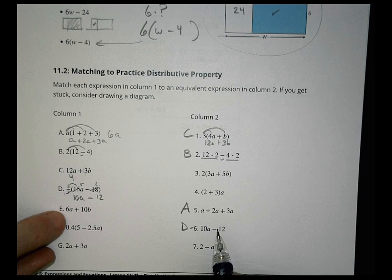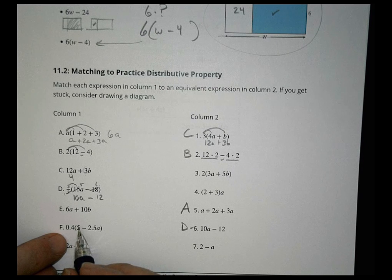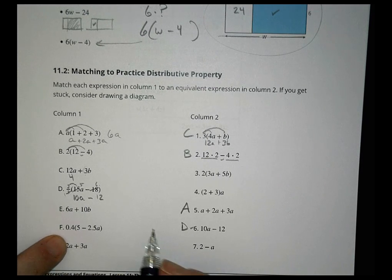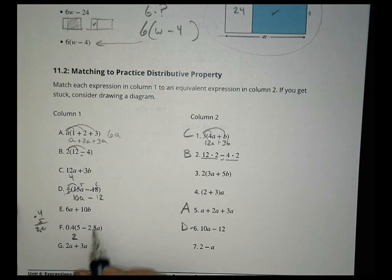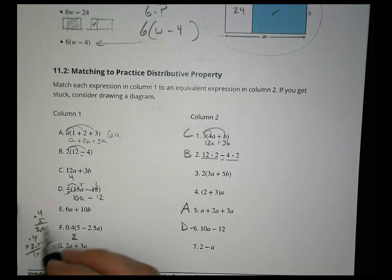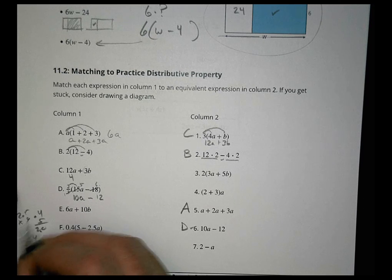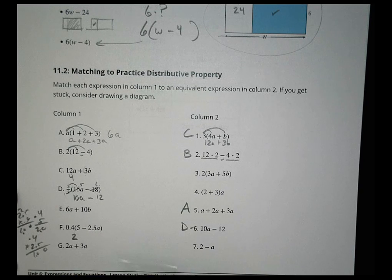This one, it's already together. Let's go over to this one. 0.4 times 5 becomes 2.0, and 0.4 times 2.5 is 1.0. So we end up with 1. That is right here, so F goes there.